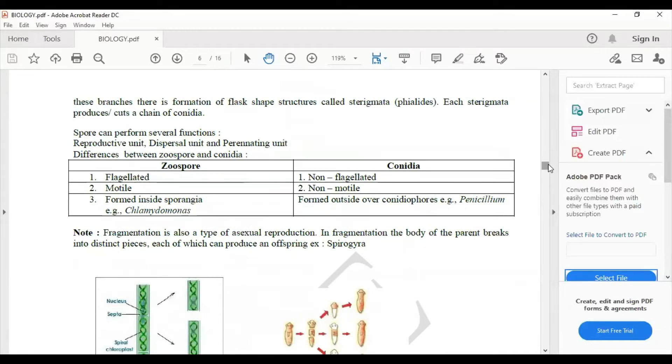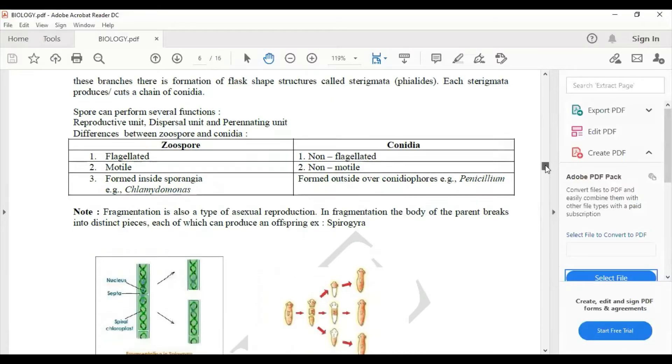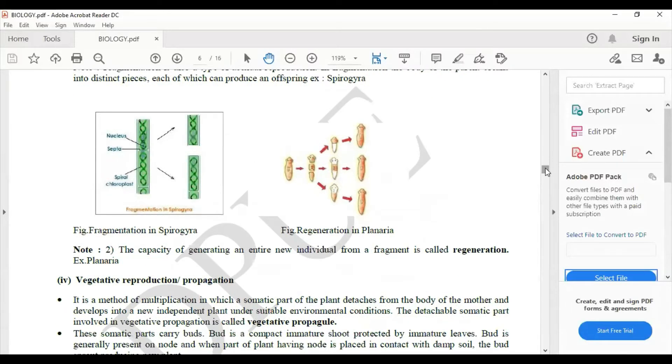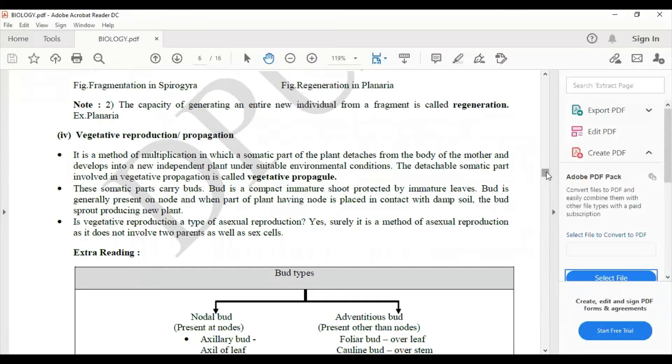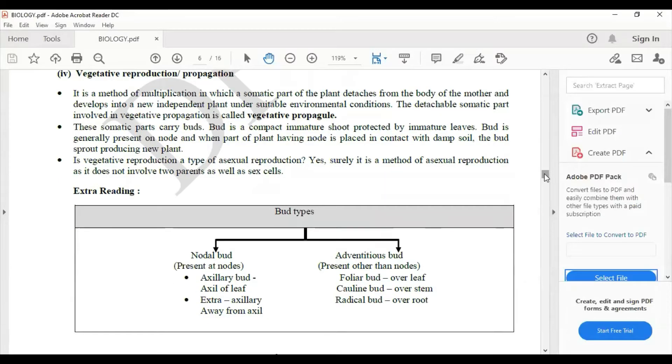And then differences between zoospore and conidia, then fragmentation, vegetative propagations or vegetative reproduction, their definition and explanation. Here is bud type.